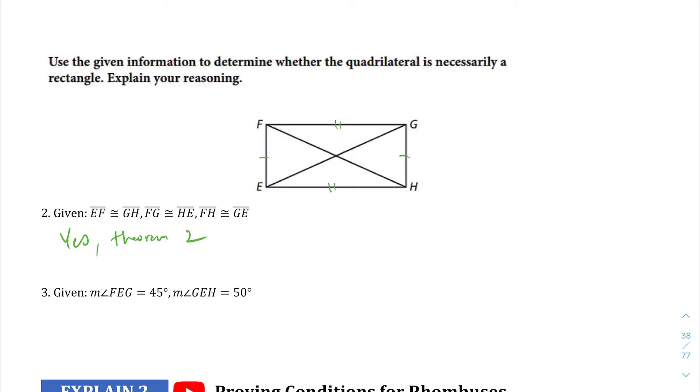Taking a look at question number three, we are told FEG. Let me erase these real quick. If angle FEG, this angle right here, if this is 45 degrees, and angle GEH, this is 50 degrees, would that make this a rectangle?